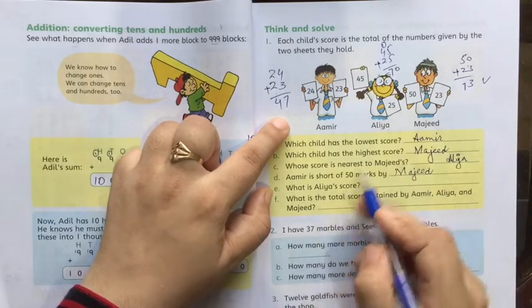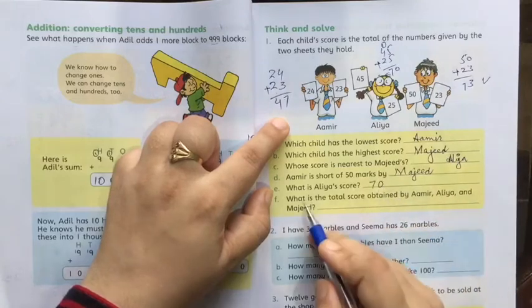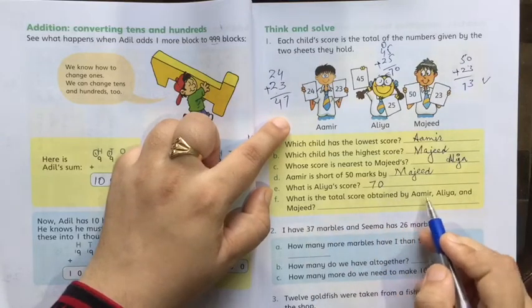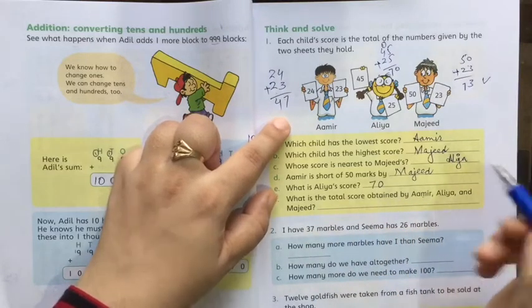What is Aliyah's score? Aliyah's score is 70. What is the total score obtained by Amir, Aliyah, and Majeed? Now at the end you have to add these.